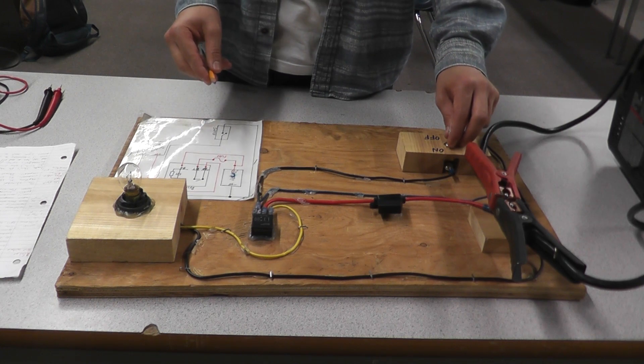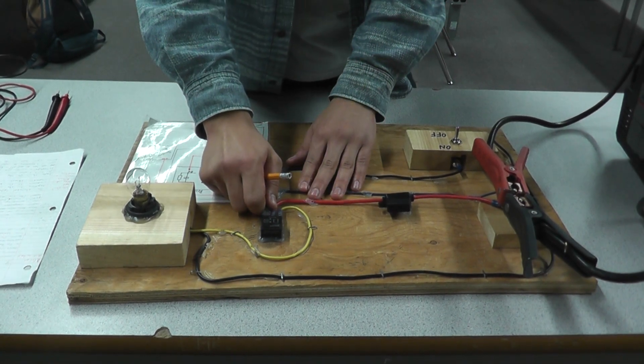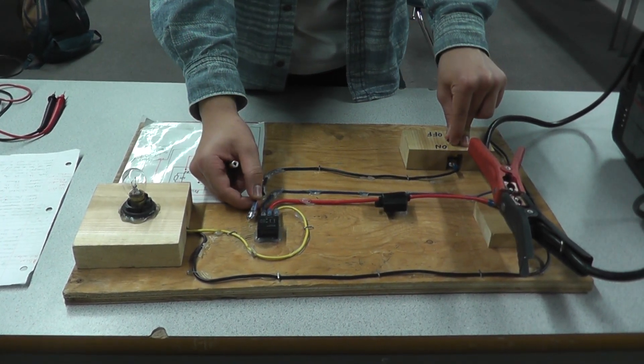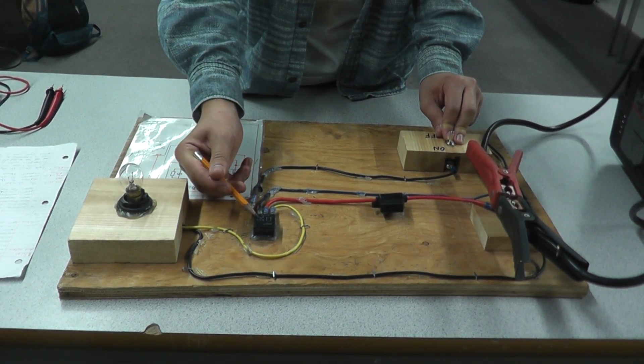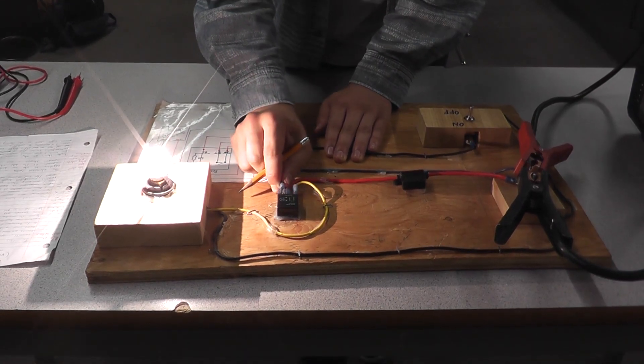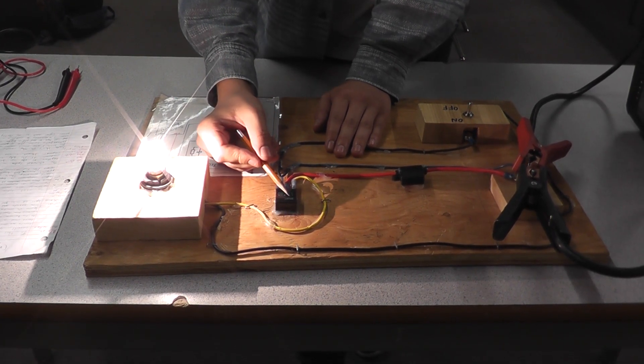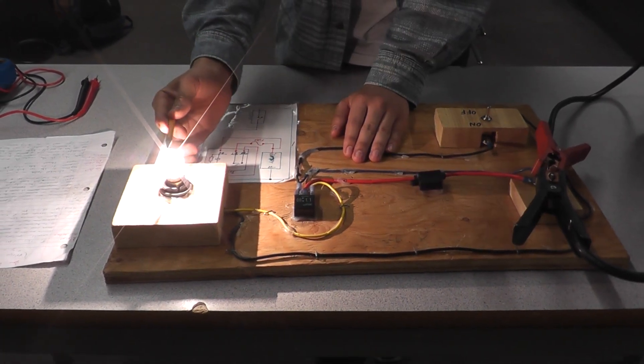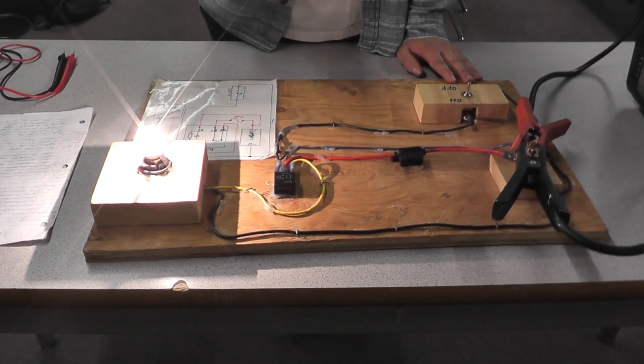This here is a relay in action. When I pull this wire out, the first circuit is broken. Because the first circuit is broken, it's not getting power to become a magnet. When the coil is powered, the switch inside the relay is closed, thus finishing the second circuit, giving power to the light bulb. And that's how the relay circuit works.